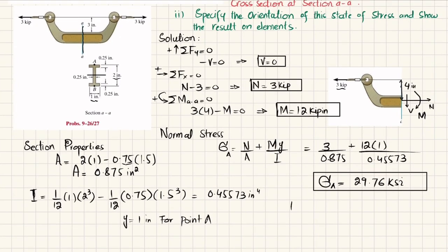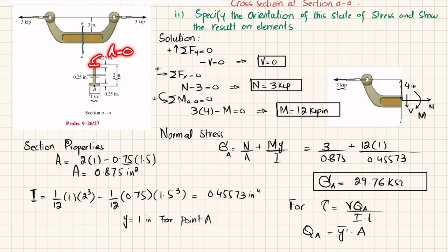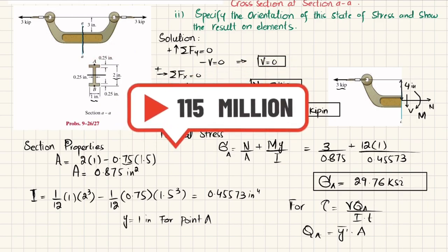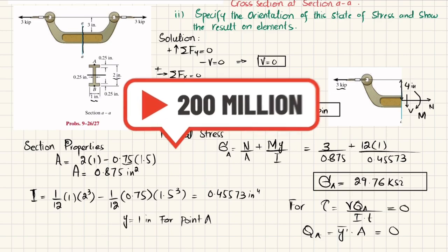For shear stress, τ = VQ/It. We need to find Q_A. Since point A is at the very top of the section, there is no area above it, so Q_A = 0. Therefore the shear stress at point A is also zero.